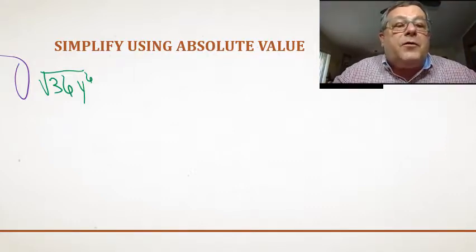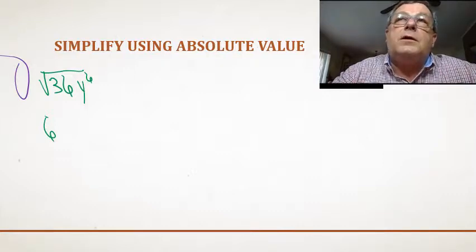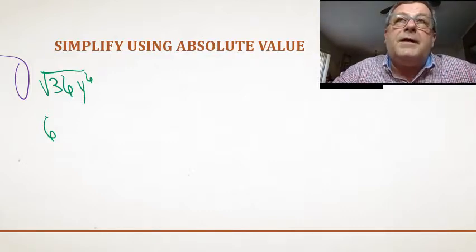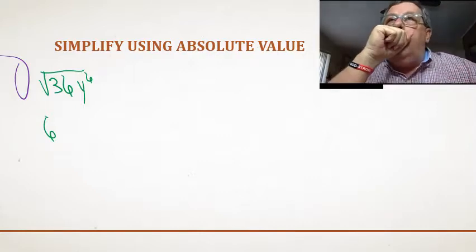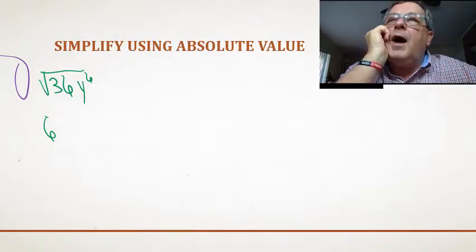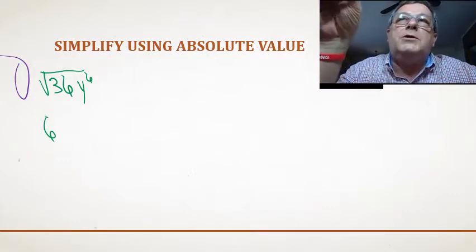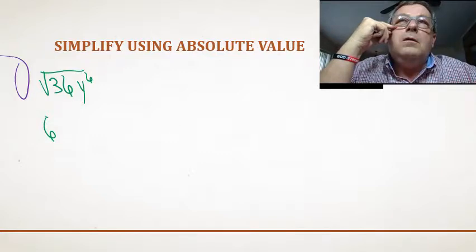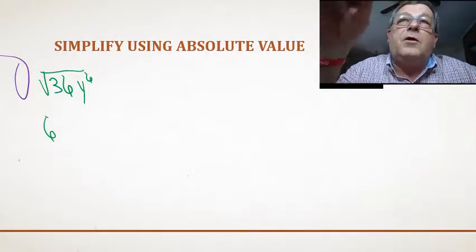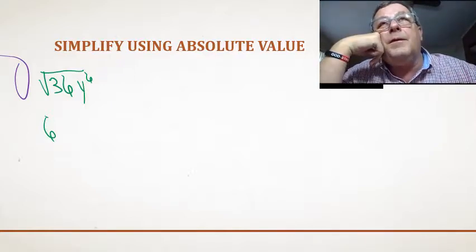The square root of 36 is 6, because 6 times 6 is 36. For y to the 6th, we take the exponent 6 and divide by 2, giving us y to the 3rd. But we need the principal square root, which must be non-negative. The problem is that a number raised to an odd power can be negative — a negative number raised to an odd power can also be negative.